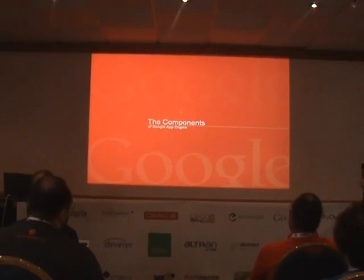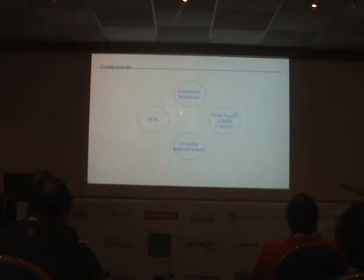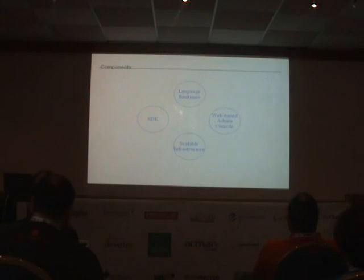Let's talk about the components. There are four major parts of App Engine: the language runtimes — what languages you can use to write your applications with, along with the library APIs; a web-based administration console; the scalable infrastructure; and the software development kit for you to use to build your apps.